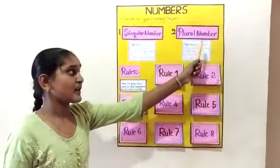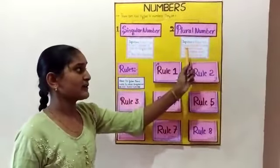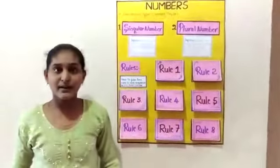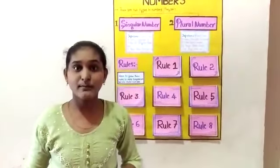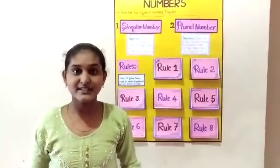So what is plural number? A noun that is more than one in number is called a plural number. For example: bags, books, pens, papers, tables, etc.